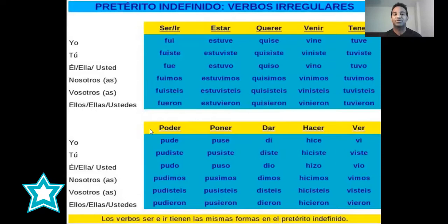Tenemos poder — to be able to or can. Yo pude, tú pudiste, él pudo, nosotros pudimos, vosotros pudisteis, ellos pudieron.